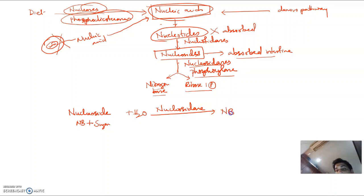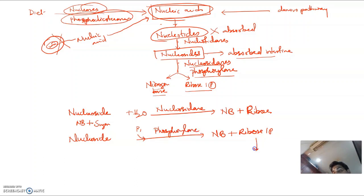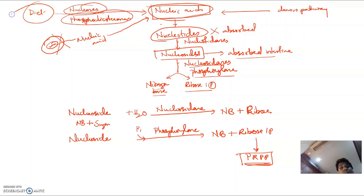These nucleosides can be absorbed inside the intestine or converted into nitrogen base and ribose-5-phosphate by nucleosidases and phosphorylases. A nucleoside can be broken down in the presence of water to form nitrogen base plus ribose sugar, or converted into nitrogen base plus ribose-1-phosphate in the presence of inorganic phosphate and a phosphorylase.